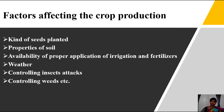So the main factors affecting crop production are: kind of seeds (good quality), properties of soil, proper application of irrigation and fertilizers, weather, controlling insect attacks, and controlling weeds. Try to recollect the procedure for selecting good quality seeds from what was learned in Class 8.